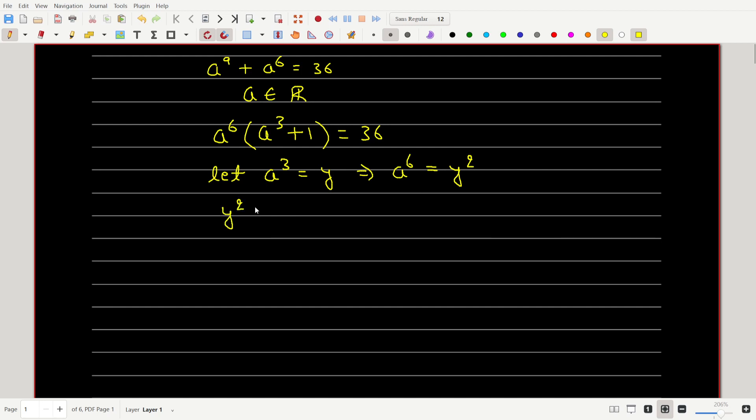We can substitute and get y squared times y plus 1 equals 36. Let's open the bracket. So we get on the left hand side y cube plus y square is equal to 36.